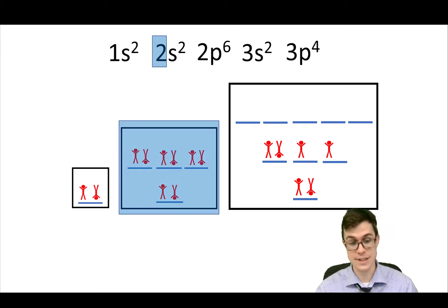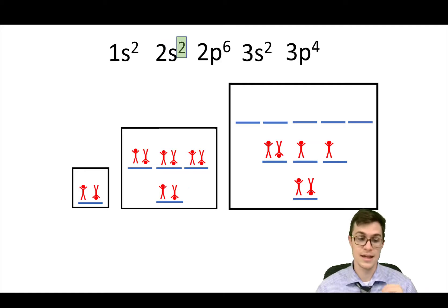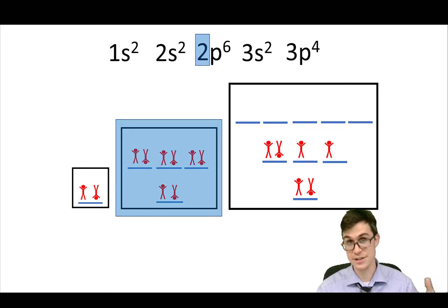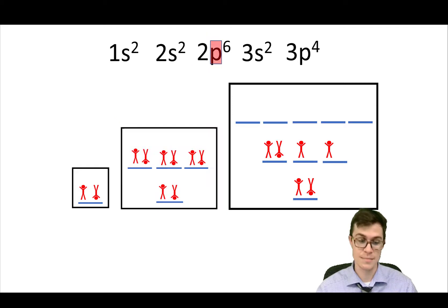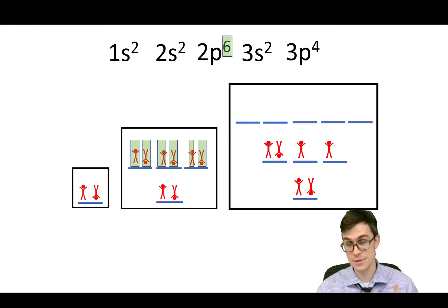Next we have '2,' so that's the second energy level. 'S,' so that's the first floor. And '2,' so there are two electrons. Then '2' again — second energy level. 'P' — now I'm on the P floor, not the S floor. And '6' — there are six electrons in that floor.